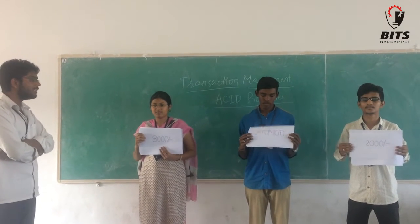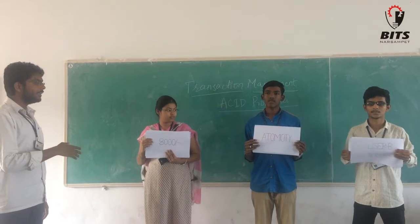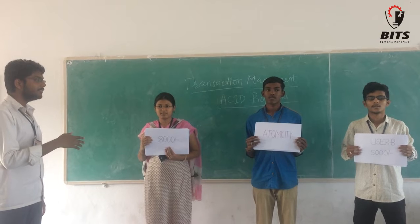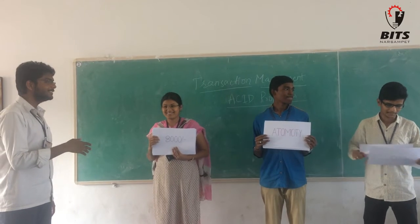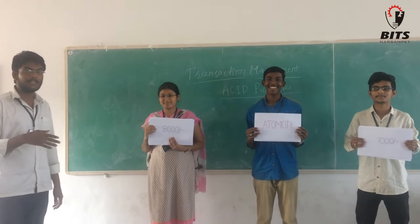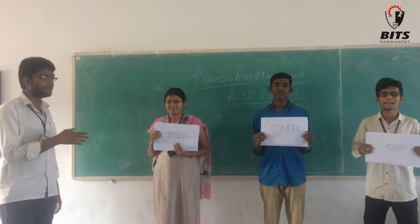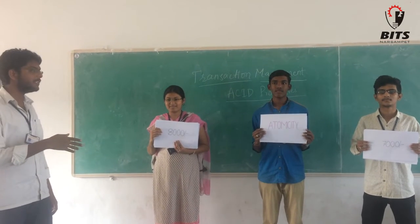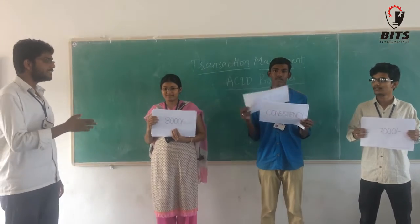Now the amounts are: User A has 8,000 and User B has 7,000. The transaction is totally complete and the amount is transferred from User A's account to User B's account. So the transaction has satisfied the Atomicity property.